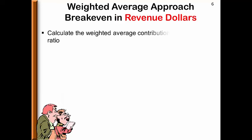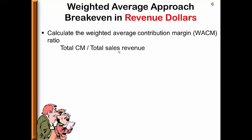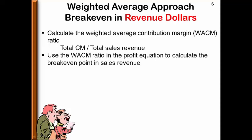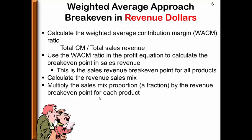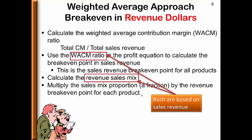For the weighted average breakeven in revenue dollars, we first calculate the weighted average contribution margin ratio — total contribution margin divided by total sales revenue, since the ratio's denominator is revenue dollars. We plug that CM ratio into the profit equation to calculate the breakeven point for all products in sales revenue. Then we calculate the revenue sales mix, multiply the sales mix proportion by the revenue breakeven point, and that gives us the breakeven point for each individual product. Both the CM ratio and the revenue sales mix are based on revenue.